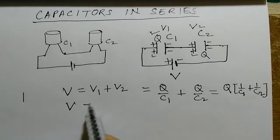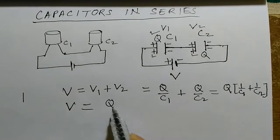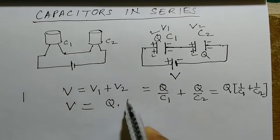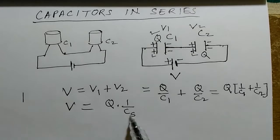We can see that V is equal to Q times 1 by Cs, Cs being capacitors in series. It means that V is equal to Q times 1 by Cs.